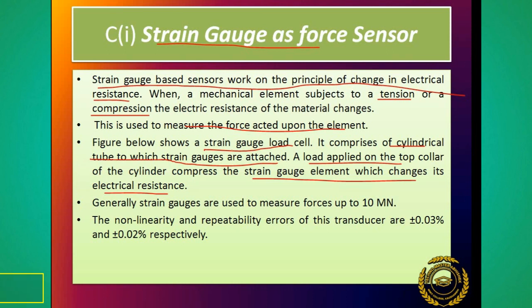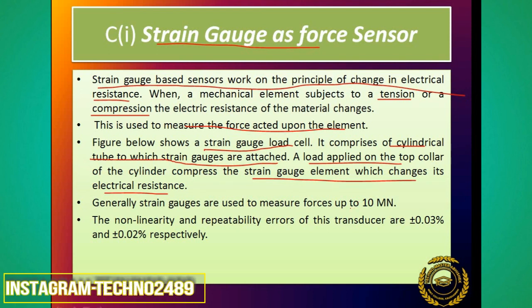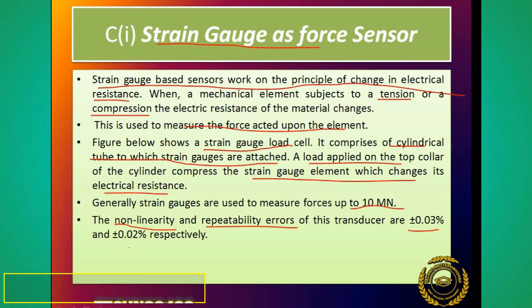Generally strain gauges are used to measure forces up to a specified range. There are non-linearity errors and repeatability errors - as I already explained in performance terminology. The non-linearity error for this transducer is plus minus 0.03, and the repeatability error is plus minus 0.02 in this type of force sensor.